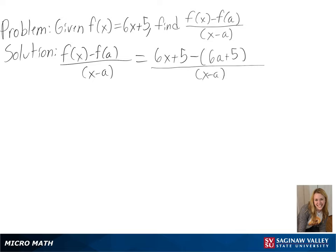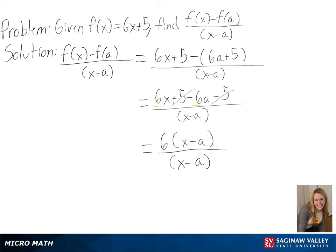We can then simplify this by subtracting 5, and then by taking out a 6 from our numerator, we are able to cancel out an x minus a, and then we are left with 6 for our final answer.